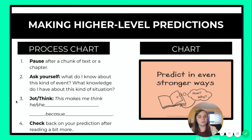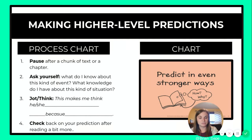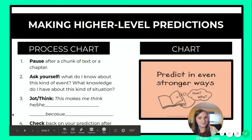Then stop and jot and think: this makes me think he or she blank because — and tell me how or why. That how and why is telling me that you're going to be taking information from the text and making a higher level prediction. Remember that key word: because tells me that you're about to make a higher level prediction.